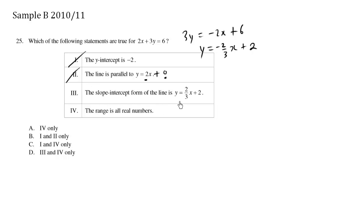The slope-intercept form of the line is y equals 2/3x plus 2. Now this is also incorrect, we have a negative slope here, this is positive.